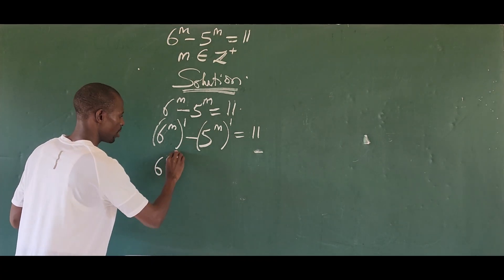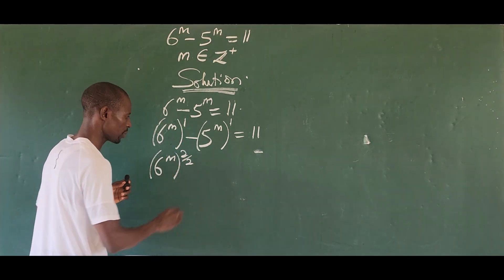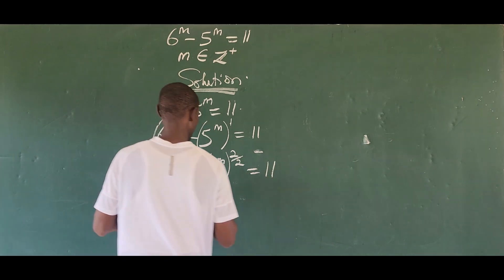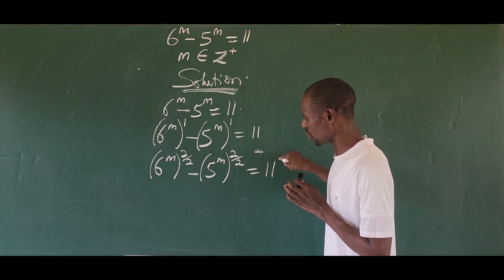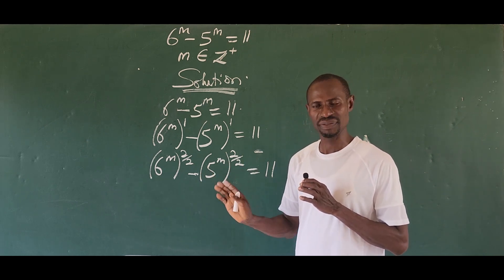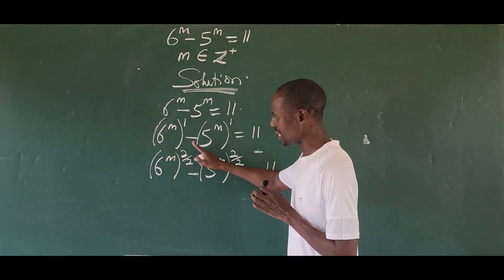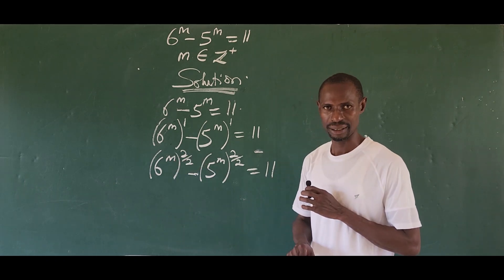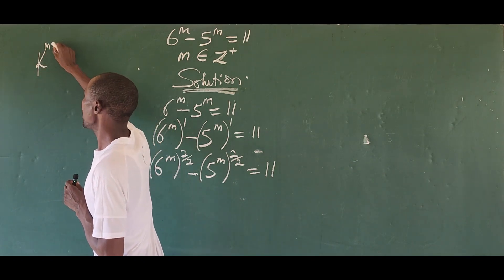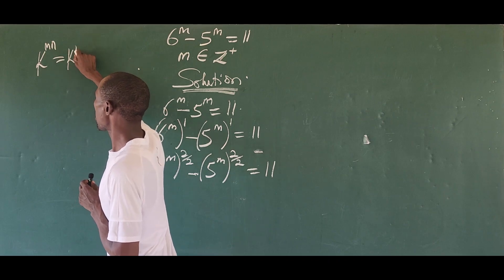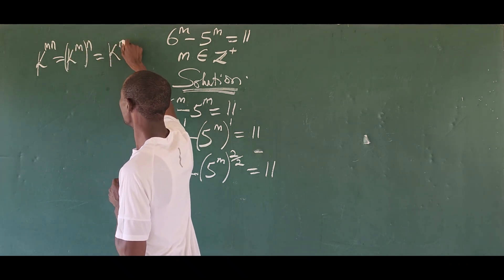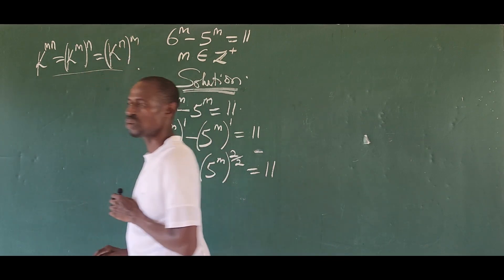So I decided to raise this to two all over two. So this is the same thing as six to the power of m all raised to the power of two all over two, which is the same thing as one. Then I do the same thing here. Five to the power of m all raised to two all over two equal to eleven. The person may ask again is that why am I not raising this to two all over two. Mind you, what I did here has not actually affected anything according to the law of equation. It says that what you do to the left hand side, you must do to the right hand side. Like I said earlier, two all over two is one. So it didn't change anything here.